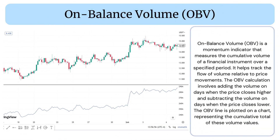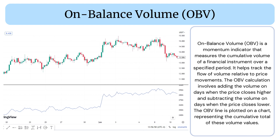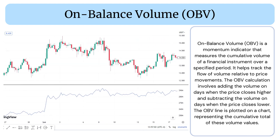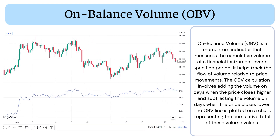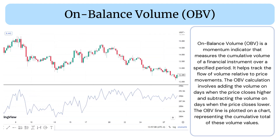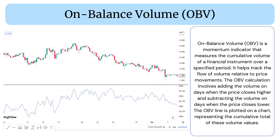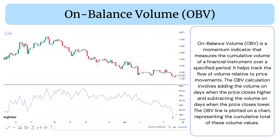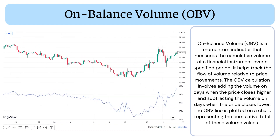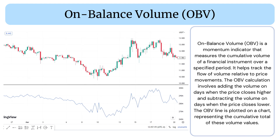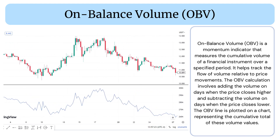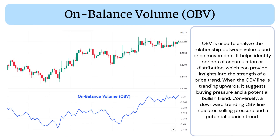On Balance Volume (OBV) is a momentum indicator that measures the cumulative volume of a financial instrument over a specified period. It helps track the flow of volume relative to price movements. The OBV calculation involves adding the volume on days when the price closes higher and subtracting the volume on days when the price closes lower. The OBV line is plotted on a chart representing the cumulative total of these volume values.